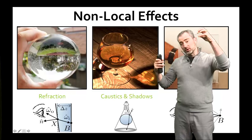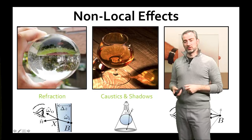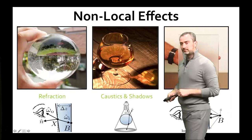Caustics and shadows happen when light comes from a source through a transmissive medium and is tinted, and if there's an index of refraction change, we get light focusing — like when you have a magnifying glass lighting up an ant. And diffusion is where light passes through a multiple scattering medium, takes a random walk, and comes out diffused, like frosted shower glass.